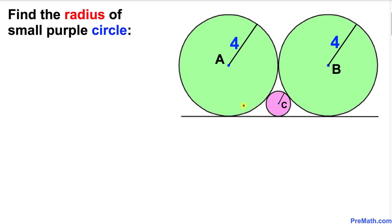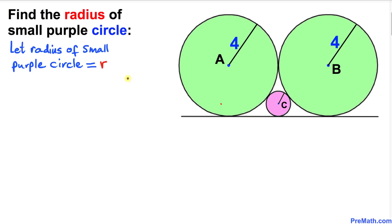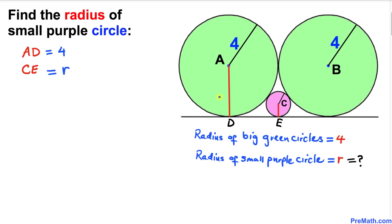Welcome to pre-math. In this video tutorial, we have two identical green circles with radius 4, along with another small purple circle. All these circles are tangent to each other, and we are going to find the radius of this small purple circle. Let's suppose that the radius of this small circle is r.